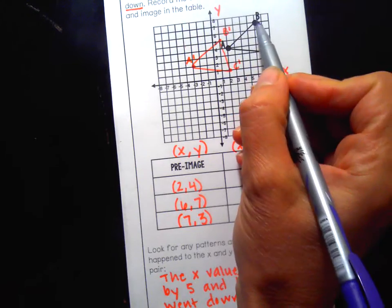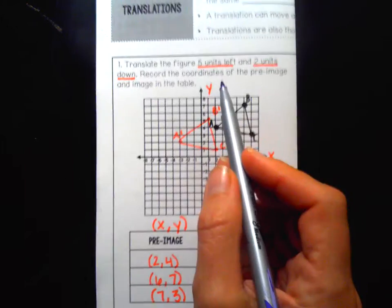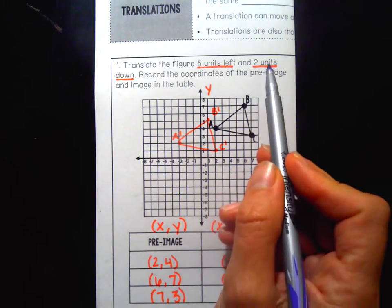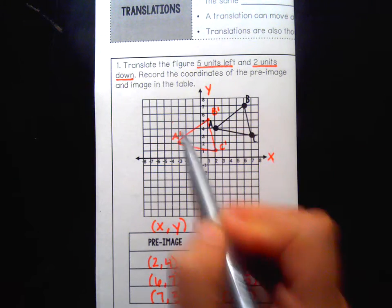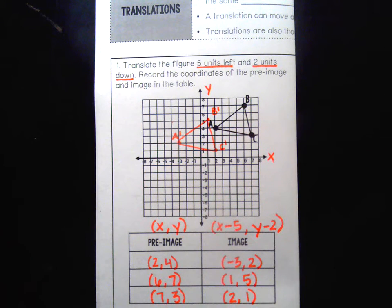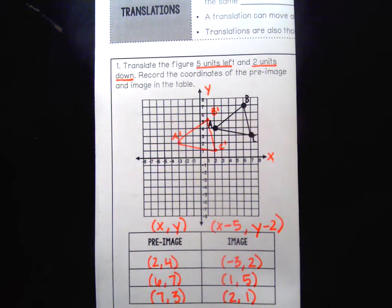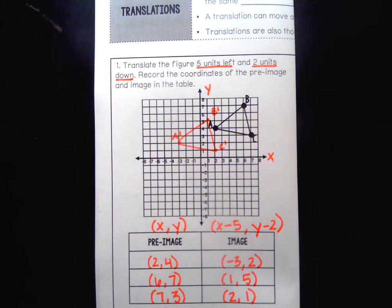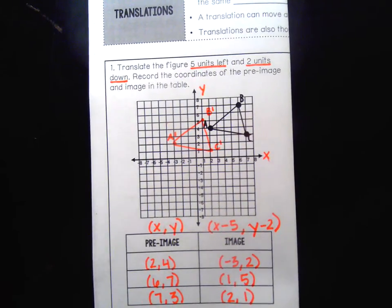In the last one that I did, I knew I had to go five units left and two units down, and I just took every point on the graph and did it that way. I'm going to do it a little bit different this time. I'm going to apply the rule and then graph it, kind of backwards from what I did before.